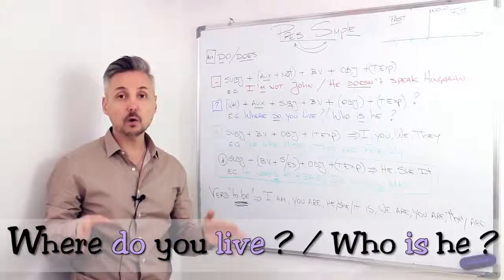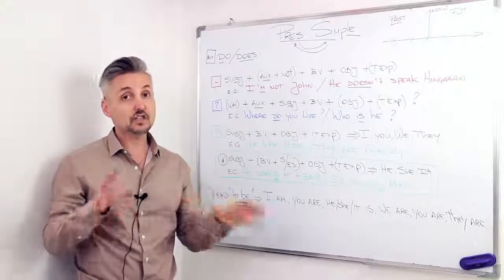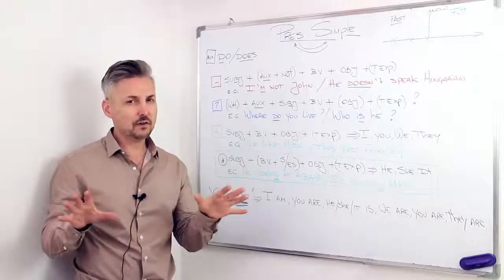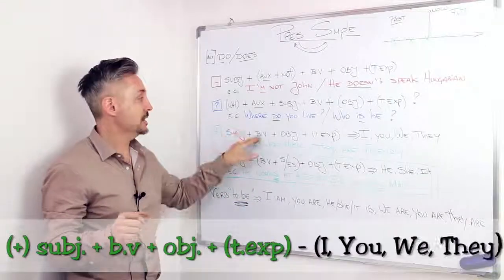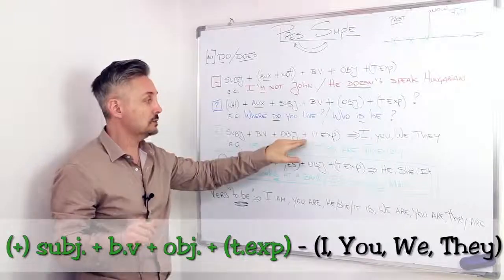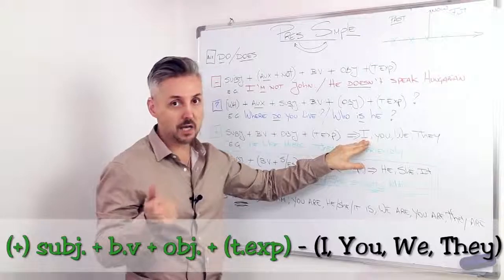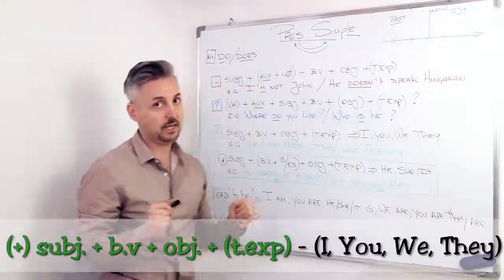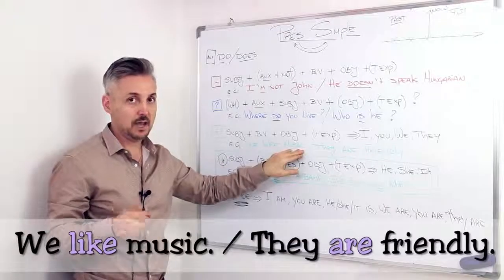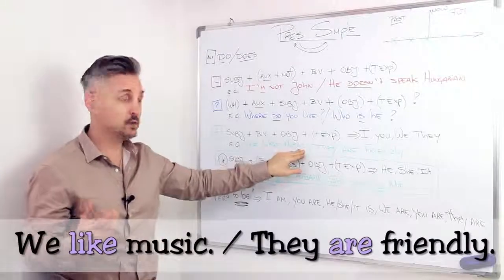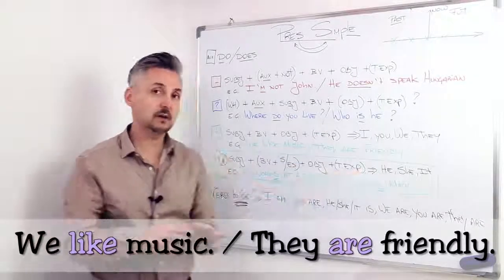Now, if we look at the most important sentence here, because we have the third person, singular, which changes, let's start first with the easiest one. So, the subject, then the base of the verb, then the object, and then the time expression, sometimes. This referring to I, you, we, and they only. So, the example, we like music. If we have an example with the verb to be, they are friendly. They are friendly. So, that's it.